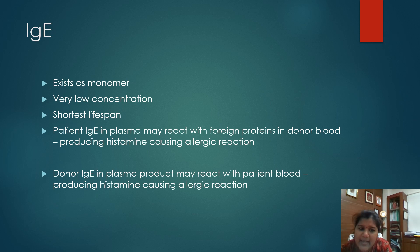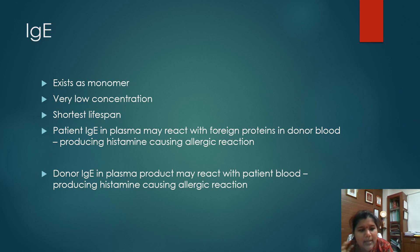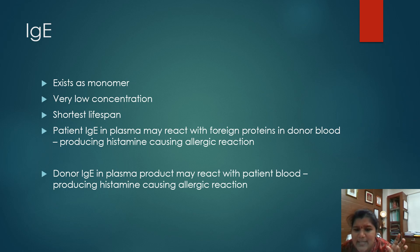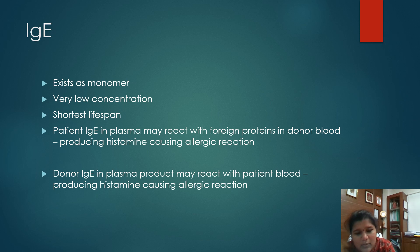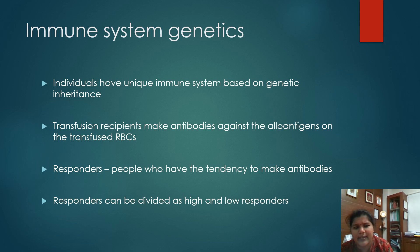Coming to IgE — IgE generally exists as a monomer at very low concentration and has a very short lifespan. You can associate IgE with allergies. Whenever there is an allergic reaction, mast cells produce IgE, which reacts with foreign proteins in donor blood, causing mast cells to produce histamine, thereby causing an allergic reaction. Also, when a donor plasma contains IgE, that will also cause an allergic reaction. So in blood banking, we must remember: patient IgE responding to allergens in donor blood, or donor IgE in plasma products reacting with the patient's blood, can produce histamine and cause a transfusion reaction.